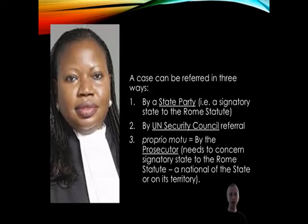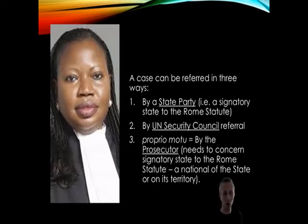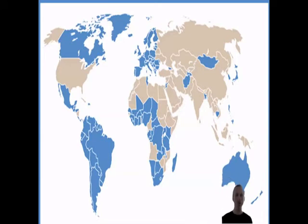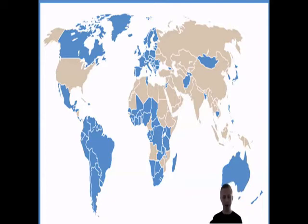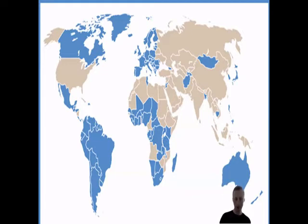It's important to note that the prosecutor can only initiate a case amongst states that have ratified the Rome Statute. If a state hasn't signed, she cannot proceed. This means it will be very difficult to get a referral for Syria since it is not a state party, and without the UN Security Council authorising this — which seems very unlikely given Russia's role in Syria — no case can proceed.